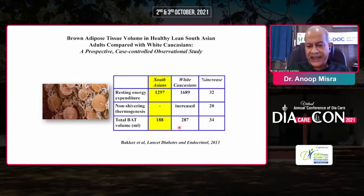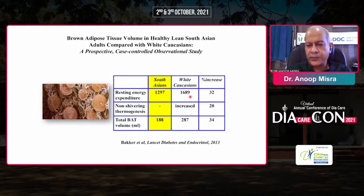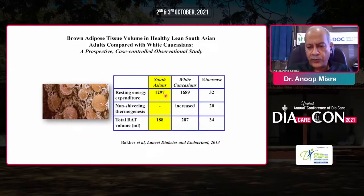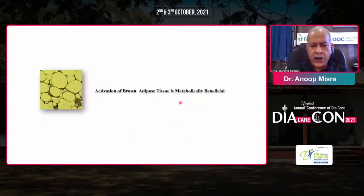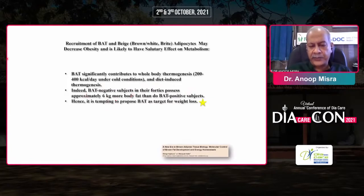Brown adipose tissue is less in Indians — a case-controlled study comparing South Asians with white Caucasians was published earlier. We may accumulate more fat because we have lesser brown adipose tissue, and hence resting energy expenditure is lesser compared to white Caucasians. Brown adipose tissue significantly contributes to whole-body thermogenesis — 200 to 400 kcal per day under cold conditions, which is a huge amount. Brown-negative subjects in their 40s possess approximately 6 kg more body fat than BAT-positive subjects.